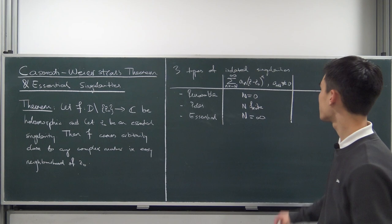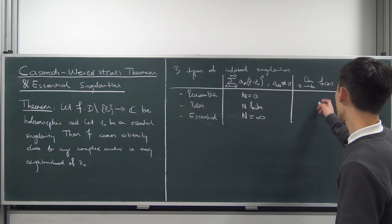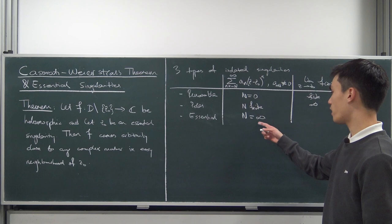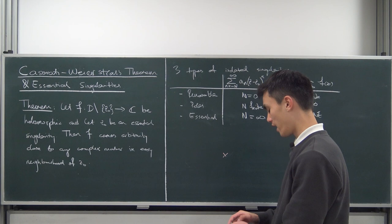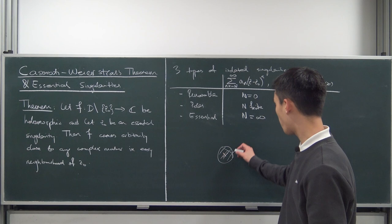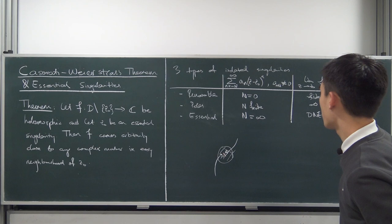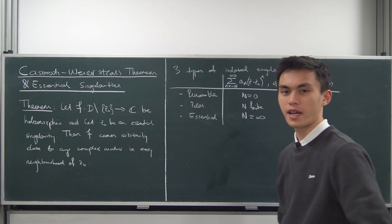There's also another way to classify singularities using limits. If you take the limit as z approaches z₀ of f(z): with a removable singularity the limit exists and is finite; with a pole the function blows up to infinity; and with an essential singularity the limit does not exist. What this means is that if you approach the singularity along two different paths and get two different values, it must be an essential singularity — with a removable it would be finite, with a pole it would be infinite no matter the path, but with an essential singularity you get complete nonsense.